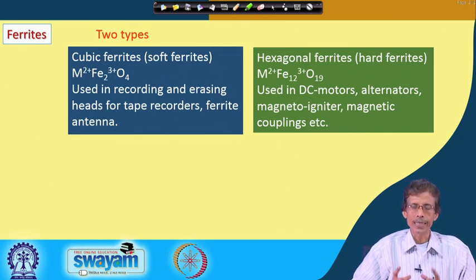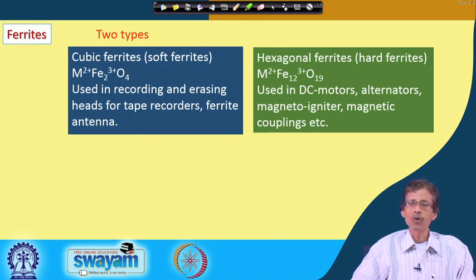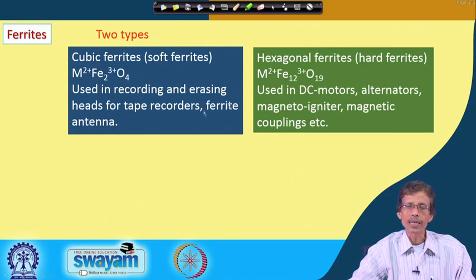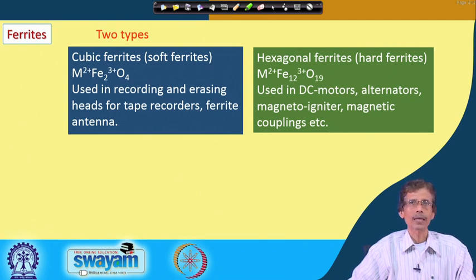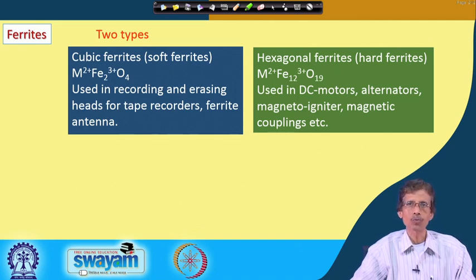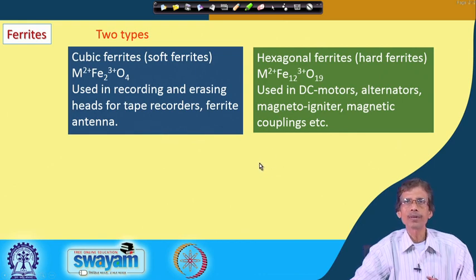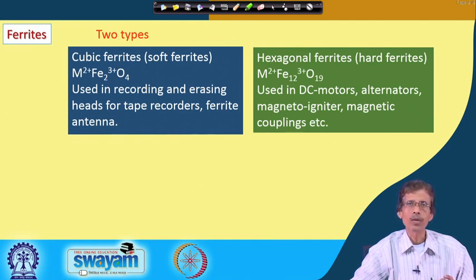This hard ferrite material is used as a core substance when coiling for different types of DC motors — for example, DC fan motors where we need the corresponding coil for the motor, armature, and related components. DC motors, alternators, magneto igniters, and magneto couplings are made from this hexagonal ferrite material. As industrial inorganic chemists, we can supply this material as a raw material, knowing how it can be converted into a finished ceramic product for electrical engineering and magneto-electrical applications.